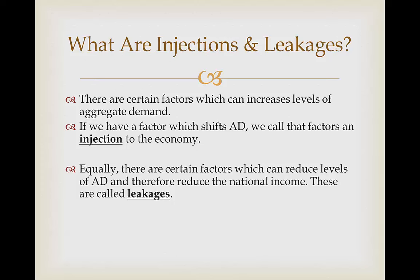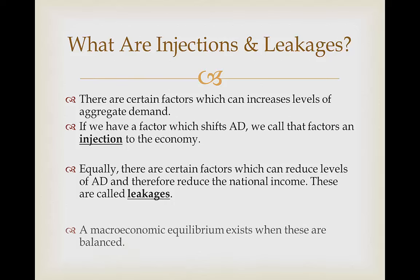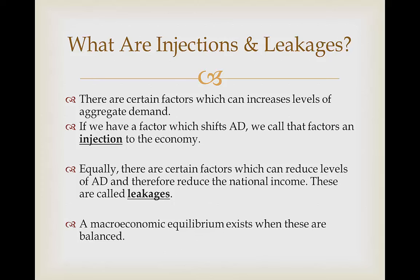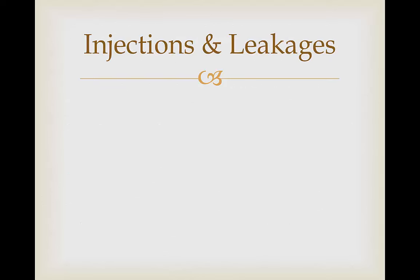Equally, there are certain factors which are going to reduce the levels of aggregate demand, and this is going to reduce national income. These are therefore called leakages because we're leaking our income. A macroeconomic equilibrium exists when we have a balance between the injections and leakages in our economy.